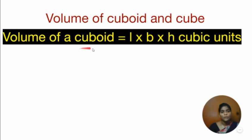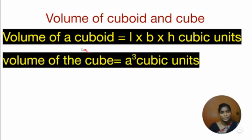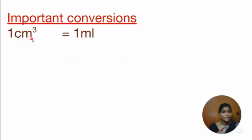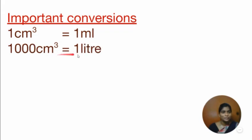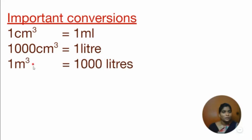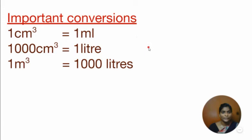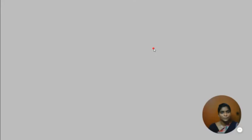Volume of a cuboid is equal to L into B into H cubic units. Volume of a cube is equal to A cube cubic units. Important conversions: 1 centimetre cube equals 1 millilitre, 1000 centimetre cube equals 1 litre, and 1 metre cube equals 1000 litres. These conversions are used when finding volumes.